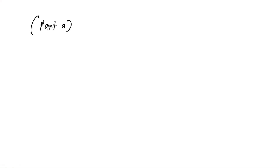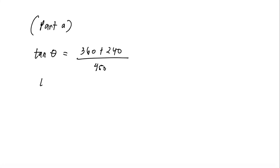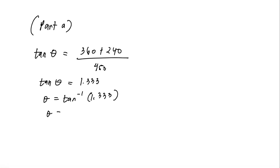So we need to find the angle first, and to find our angle we need to use tangent equals 360 plus 240 divided by 450. We have tangent equals 1.333, so this would be equal to tangent negative 1 of 1.333. And we have our angle that is 53.13 degrees.